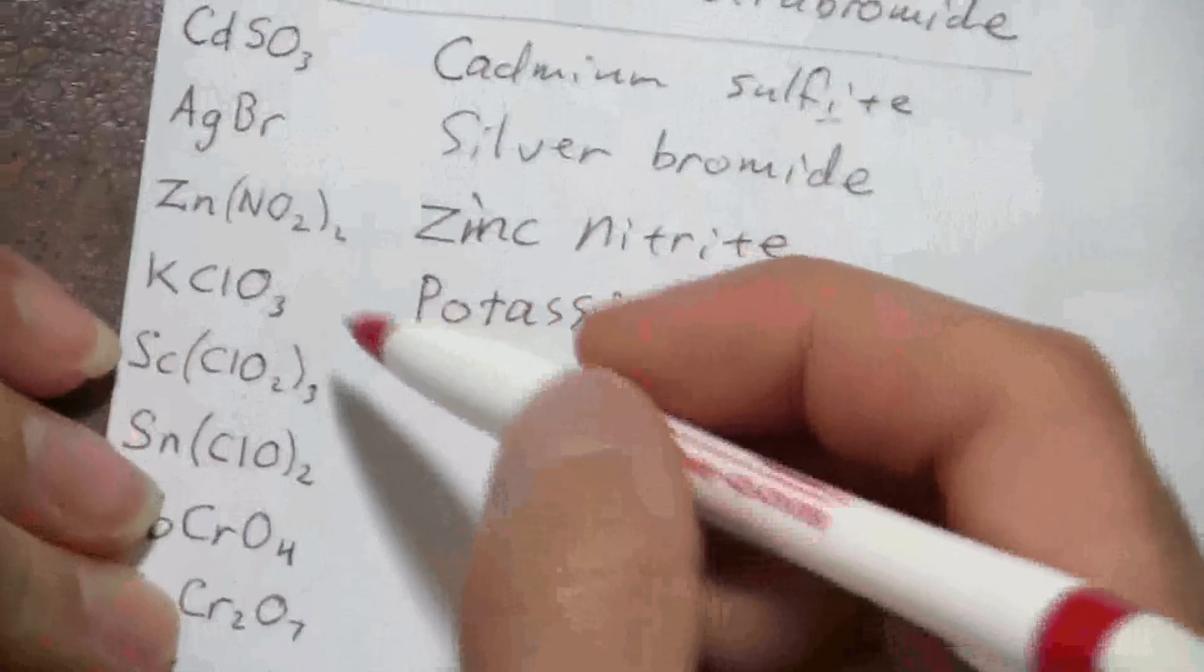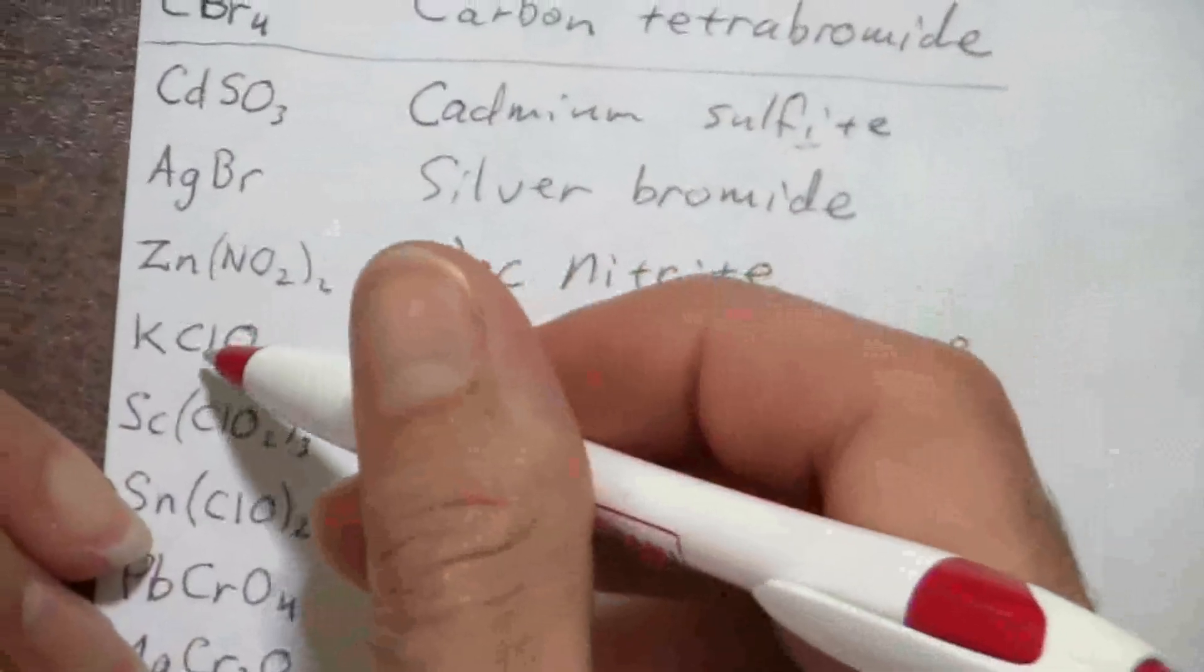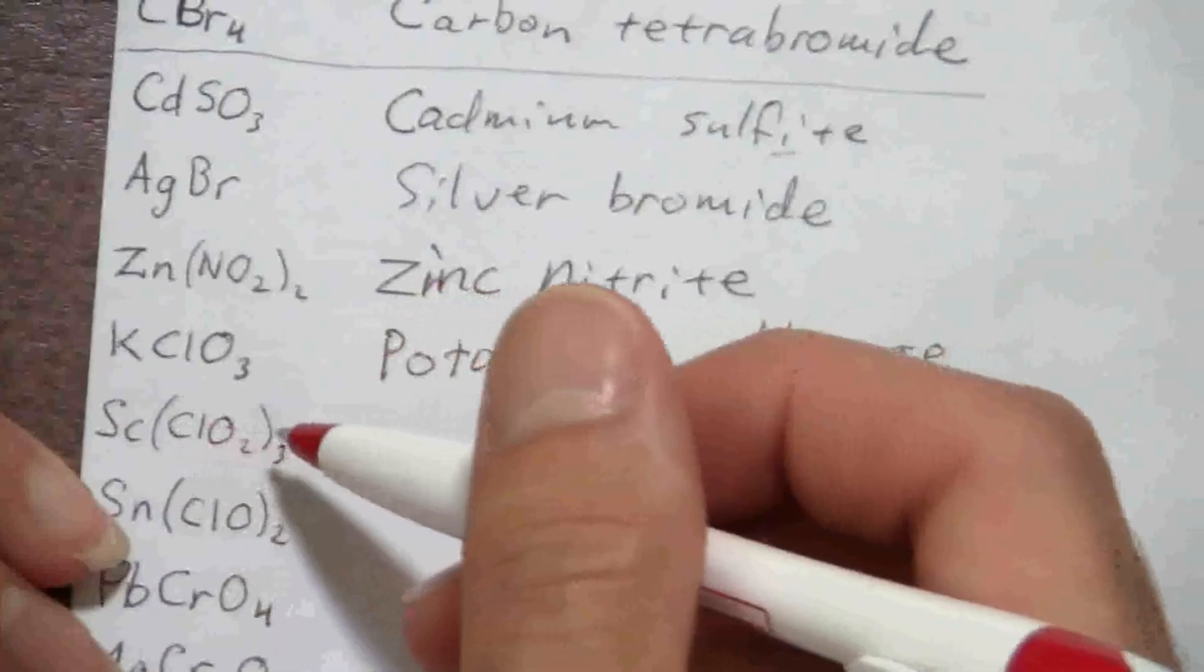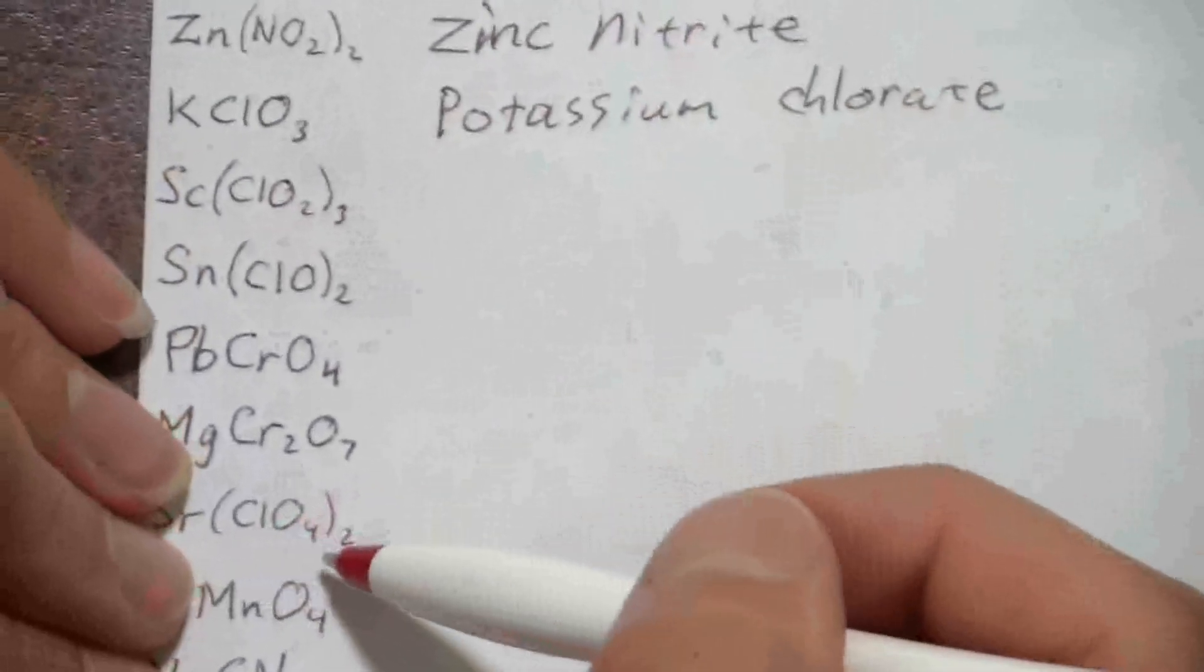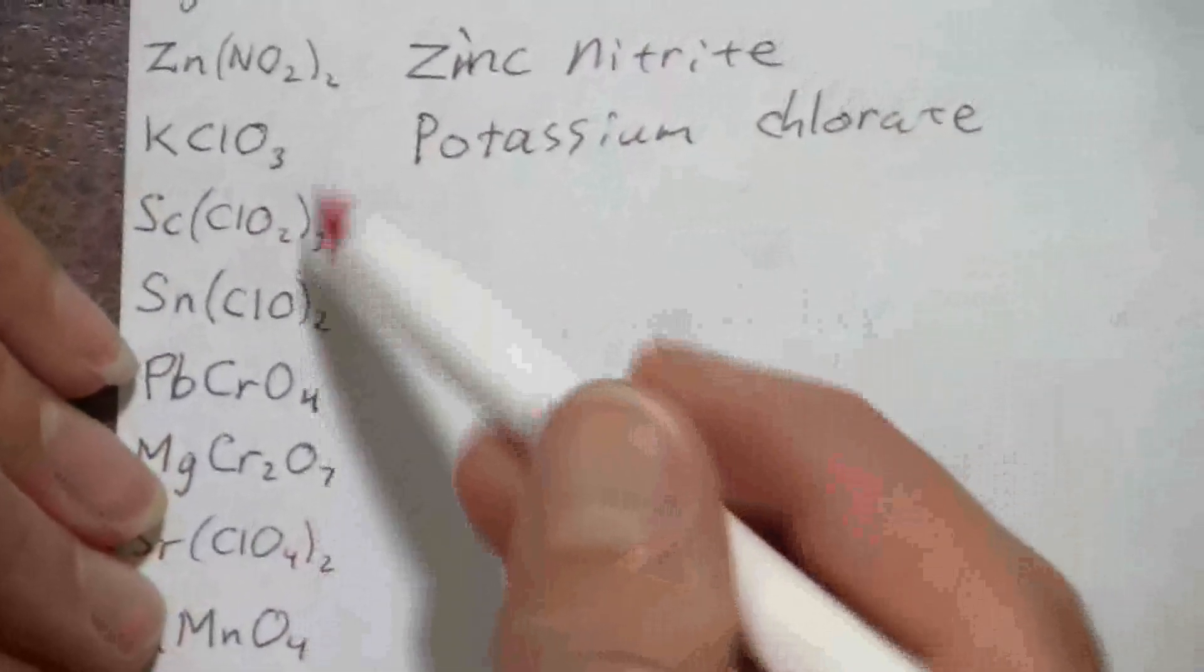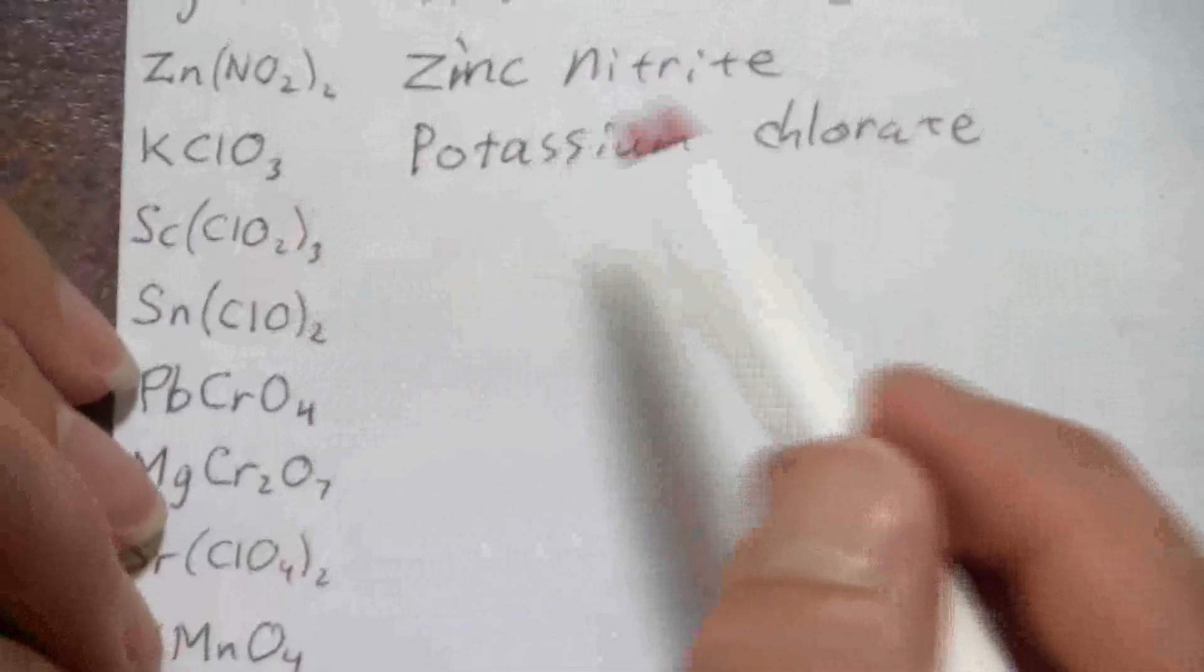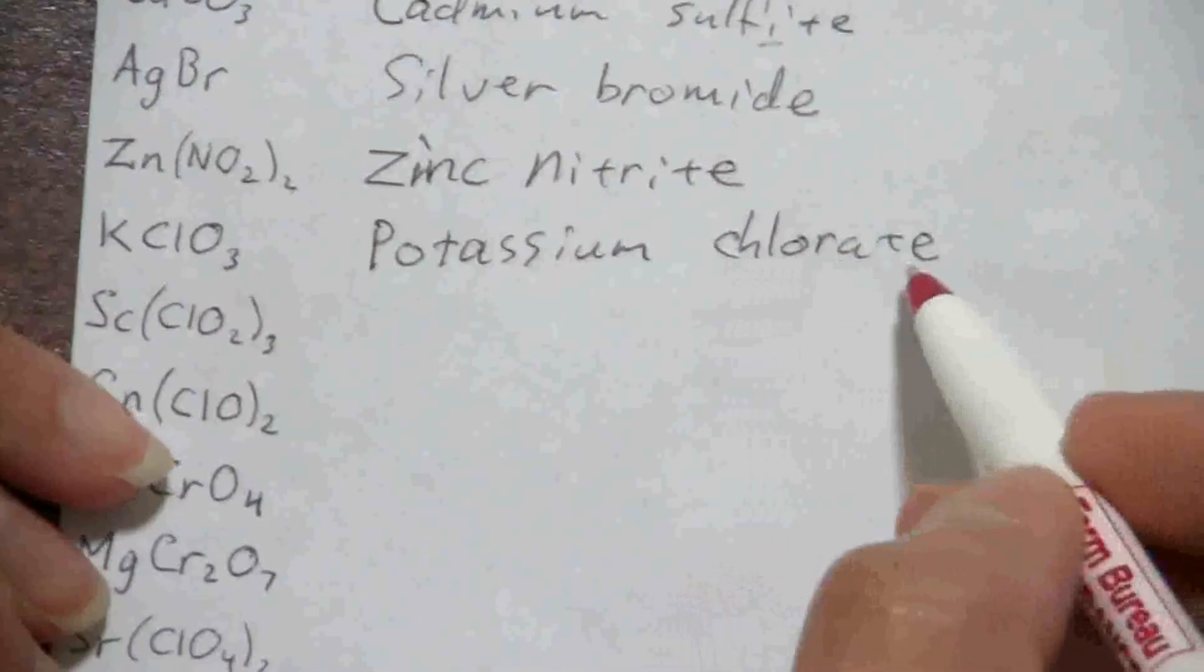This actually is part of a series. There's ClO3, ClO2, ClO, and even ClO4. So 4, 3, 2, 1, there's chlorate.